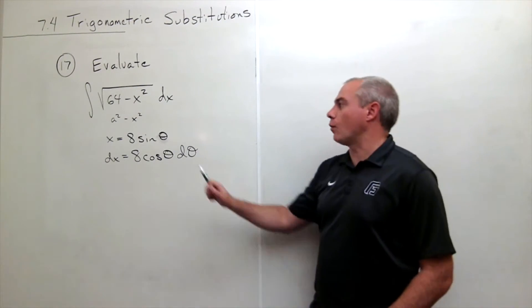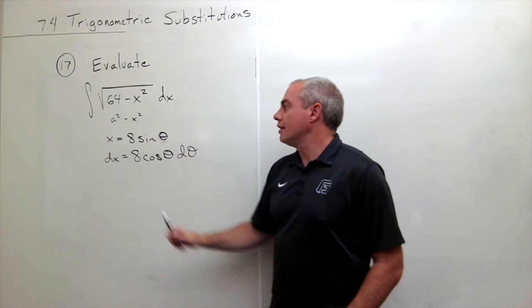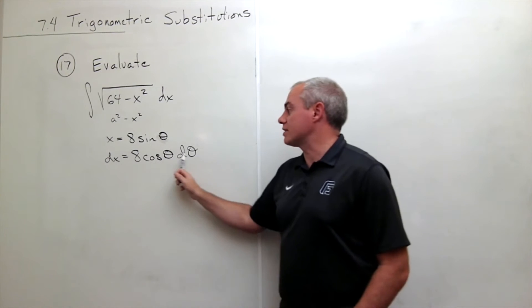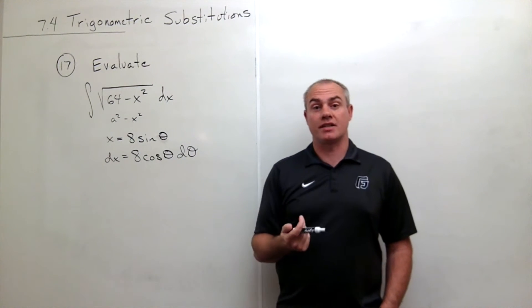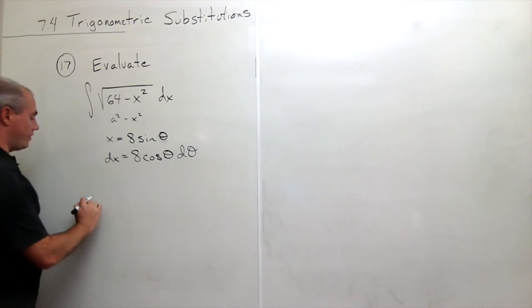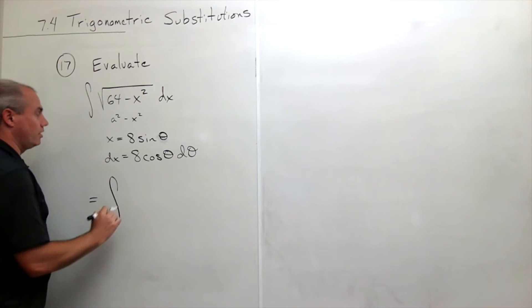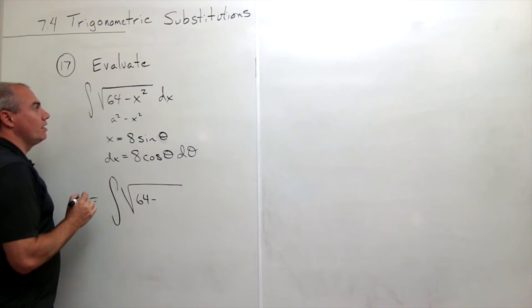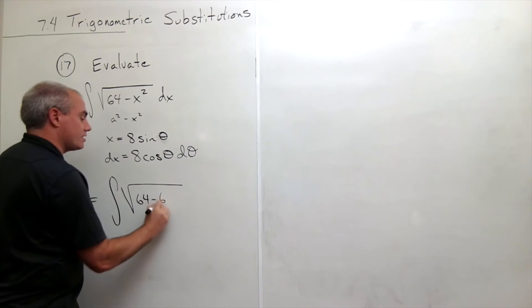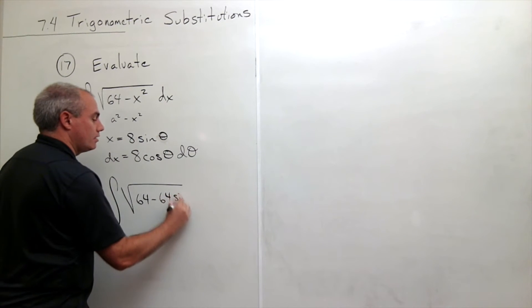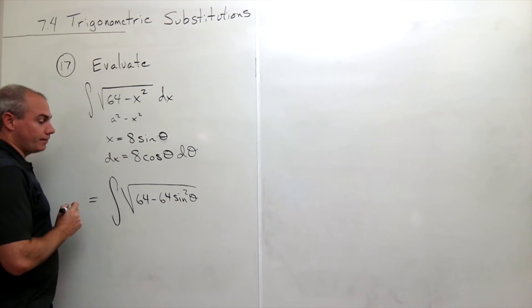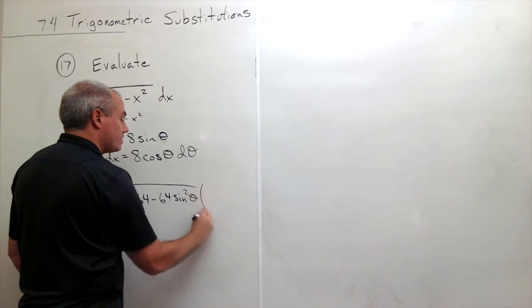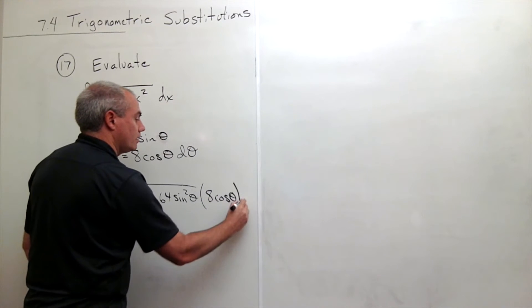The first thing I did is figure out the form a squared minus x squared. Then I made the correct substitution: x is 8 sine theta and dx is 8 cosine theta d theta. Now I'm ready to rewrite that integral using this substitution. So I'm going to rewrite this as the integral of the square root of 64 minus, and since x is 8 sine of theta, that's 64 sine squared theta, then times dx which is 8 cosine theta d theta.